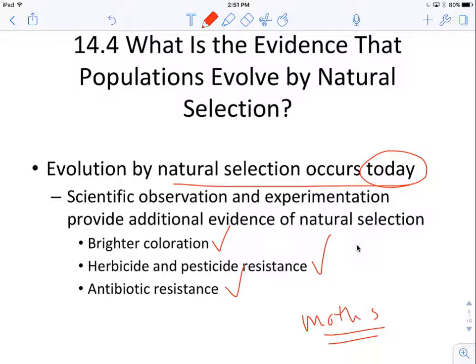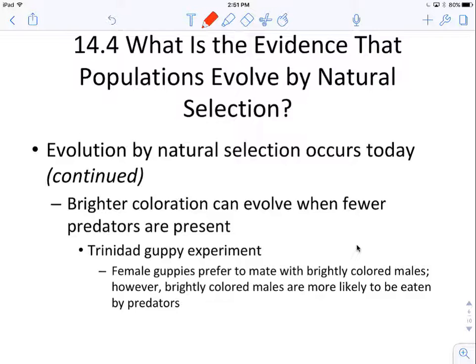For example, antibiotic resistance — because of all the antibacterial soap and spray and hand stuff we use, we're creating races of super bacteria that can withstand all of these things we're putting on them. So we're going to look at a specific example of natural selection: the Trinidad guppy experiment.